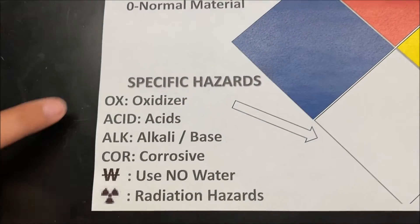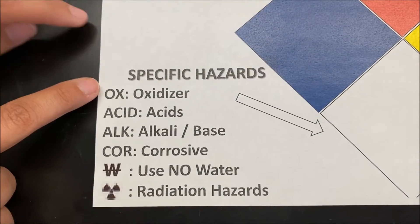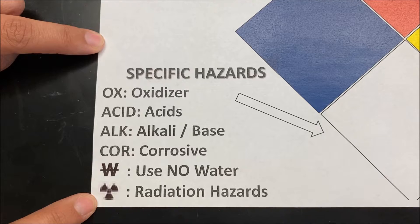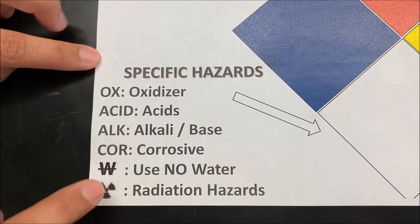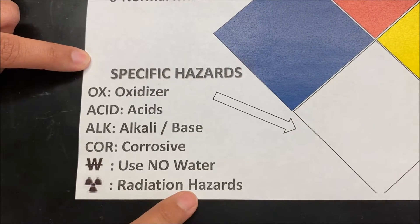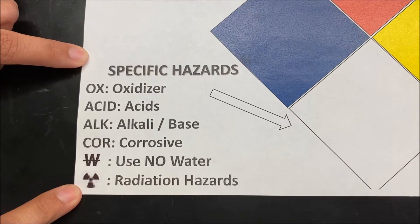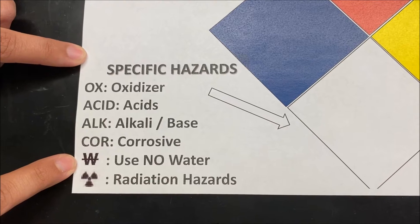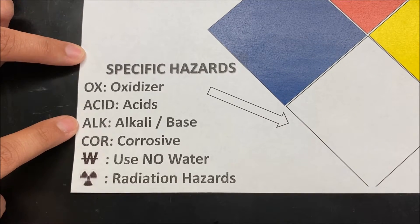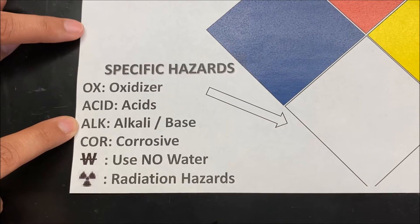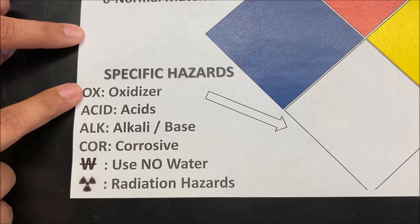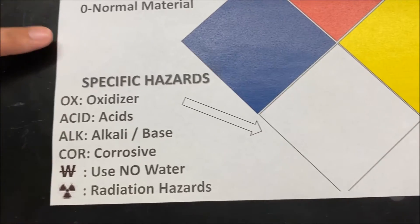The specific hazards in the white box will show one of these symbols: a radiation hazard, no use of water, corrosive, an alkali base, acids, or an oxidizer.